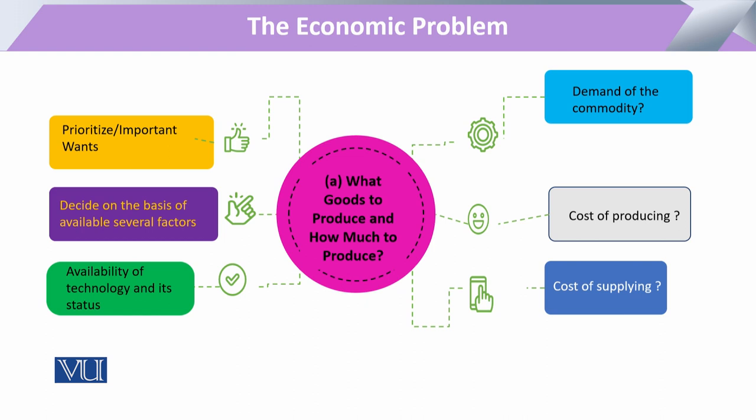Any producer, any entrepreneur has to decide what to produce and how much to produce — that is, what the quantity or output is. Looking at these two decisions, we need to estimate our best options.